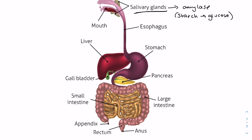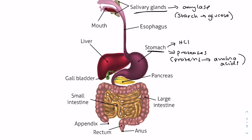Then we have the gastric glands, which are present in the stomach. These secrete gastric juices, which include hydrochloric acid — which we'll talk about why we need that later — and also proteases, which basically break down proteins into amino acids. Then we have the pancreatic glands, and these secrete pancreatic juices, which include lipase, more proteases, and amylase.